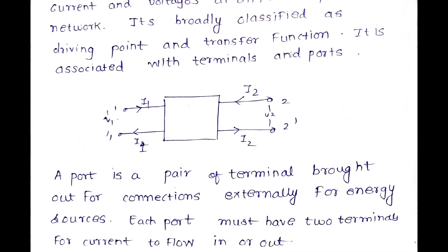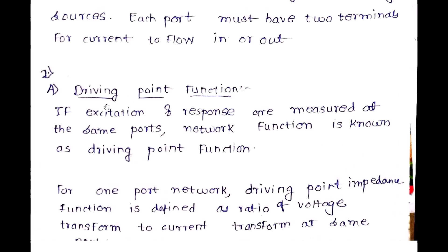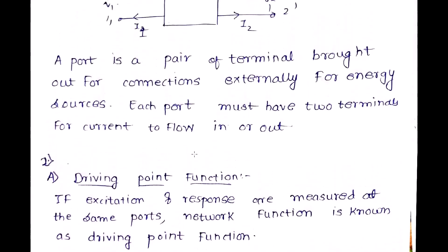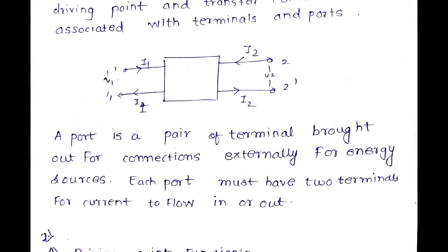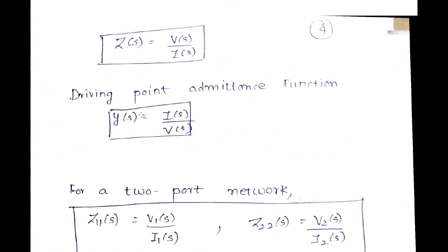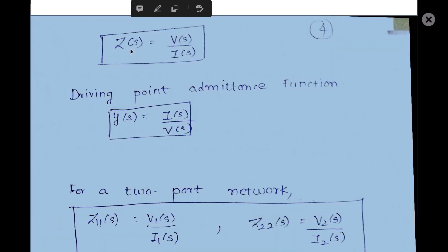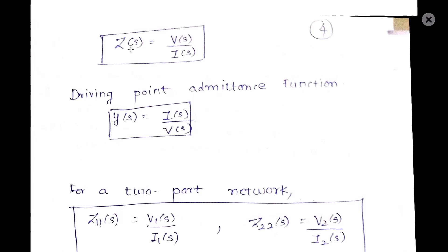Regarding the driving point function: if the excitation and the response are measured at the same port, the network function is known as the driving point function. This means parameters like impedance and admittance are measured at the same port. The driving point impedance Z(s) is given as V(s) / I(s), and the driving point admittance is given as I(s) / V(s), where s is the Laplace transform variable.